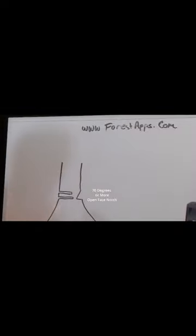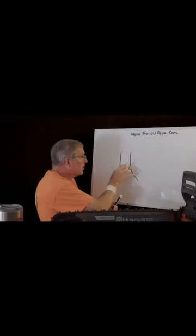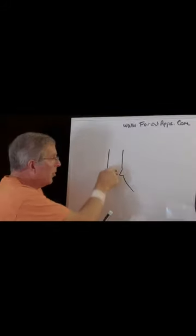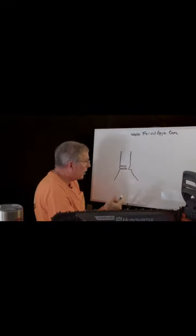70 degrees or more, your back cut can remain even because that hinge would hold a tree with straight grain. You could go up and down just about anywhere on the level and you would have the hinge that you planned.